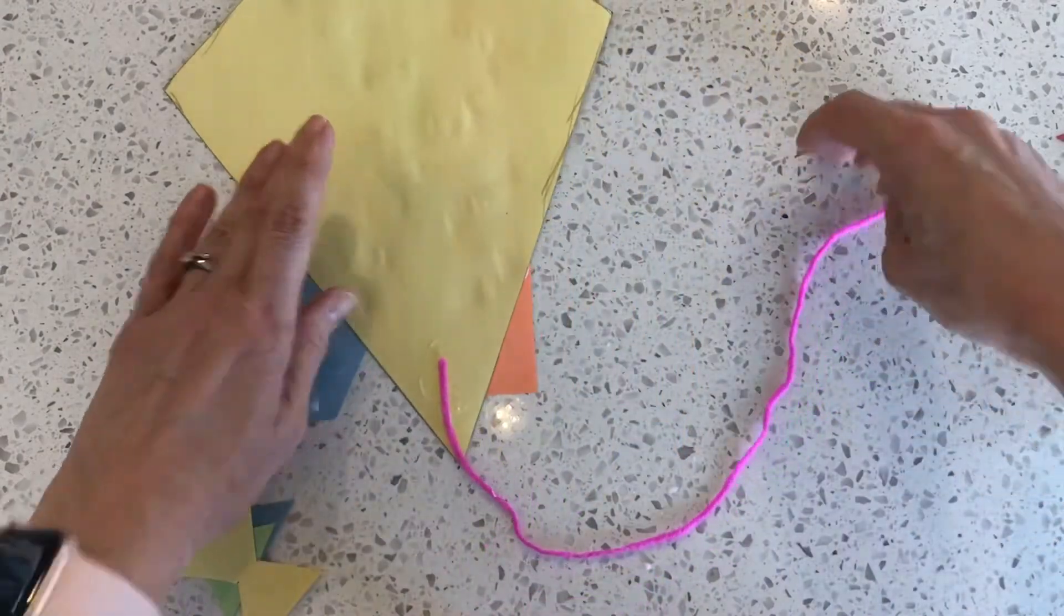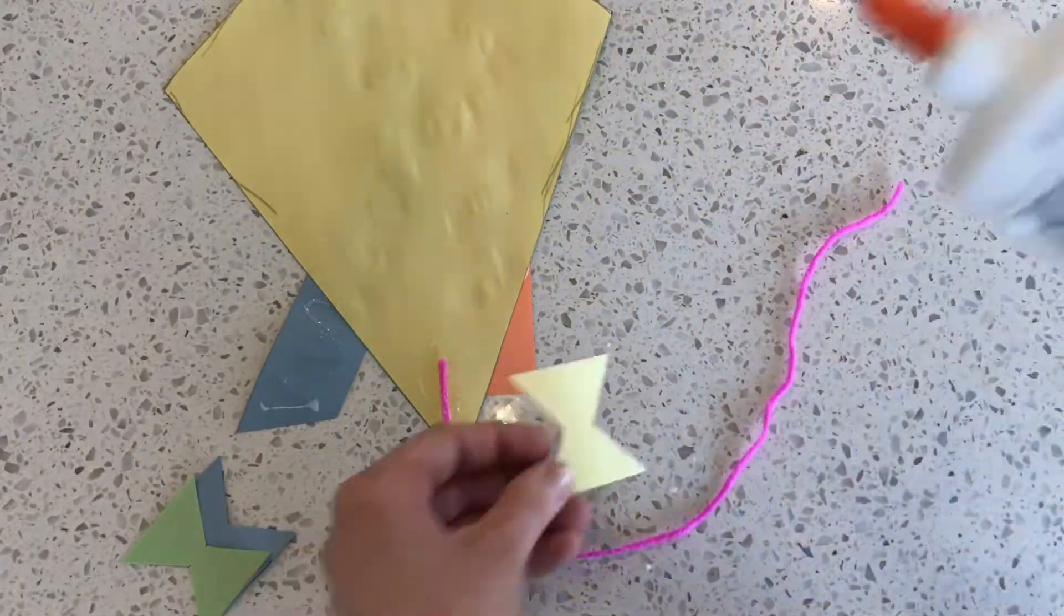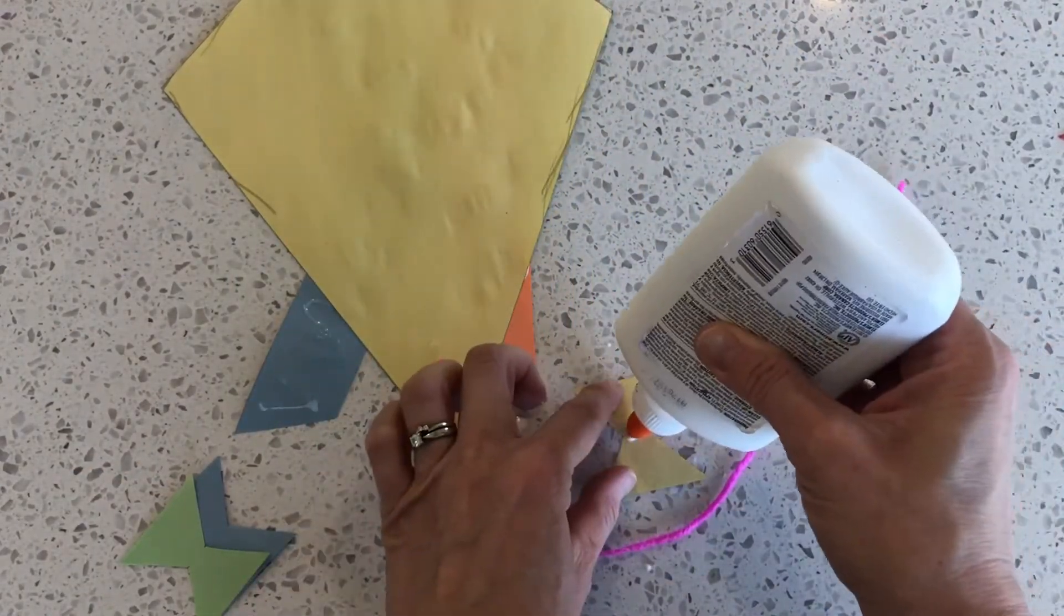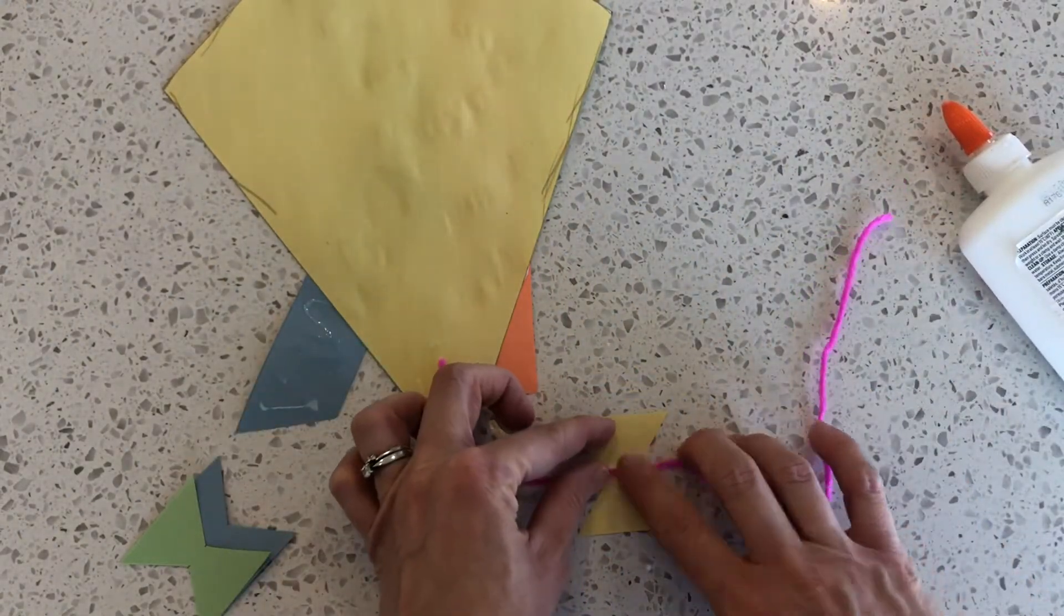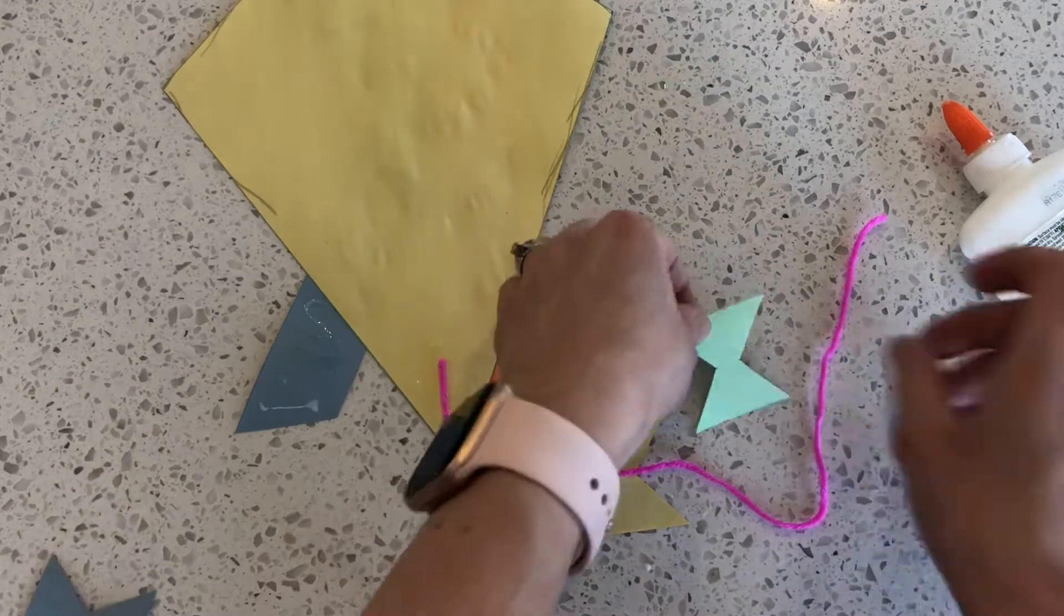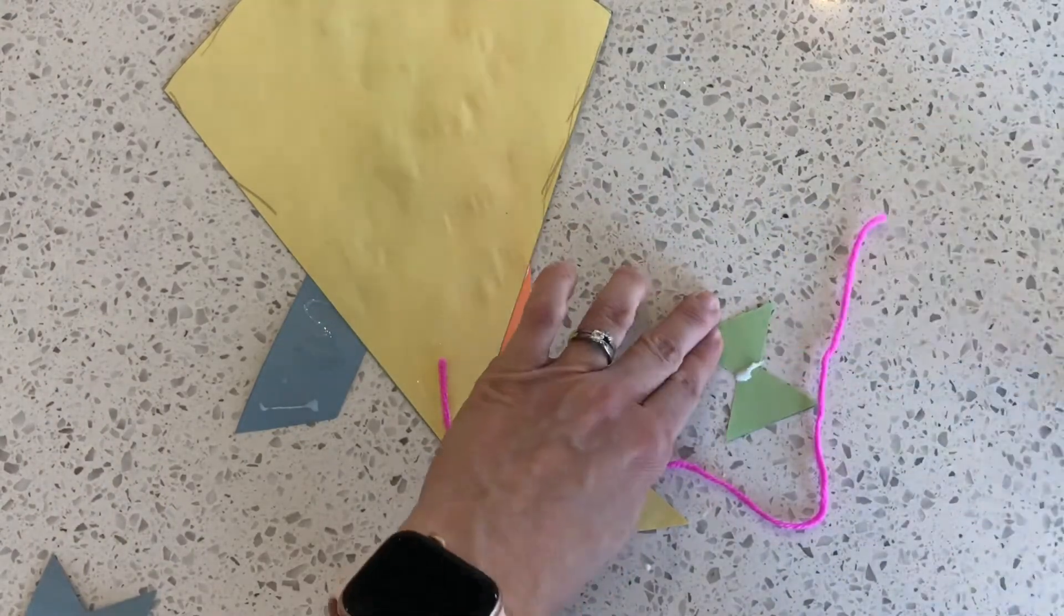Now keep your kite flipped over and glue on the little bows that go on your string. There's four bows to glue on. And we'll glue the string to the back of the bows.